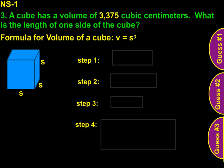And question number three, the last question we're going to do. A cube has a volume of 3,375 cubic centimeters. What is the length of one side of the cube? Well, the first thing you need to know is the formula for the volume of a cube, which is V equals S cubed.